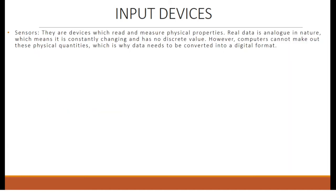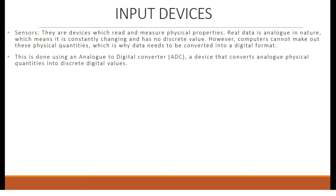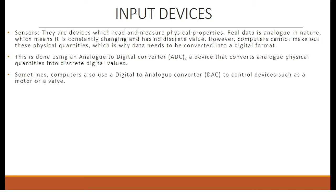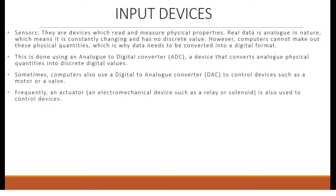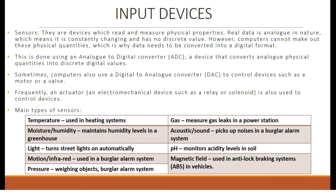Sensors are devices which read and measure physical properties. Real data is analog in nature, meaning it is constantly changing and has no discrete value. Computers cannot process these physical quantities directly, so data needs to be converted into digital format using an analog-to-digital converter, or ADC — a device that converts analog physical quantities into discrete digital values. Computers also use a digital-to-analog converter, or DAC, to control devices such as a motor or valve. An actuator, which is an electromechanical device such as a relay or solenoid, is also frequently used to control devices.